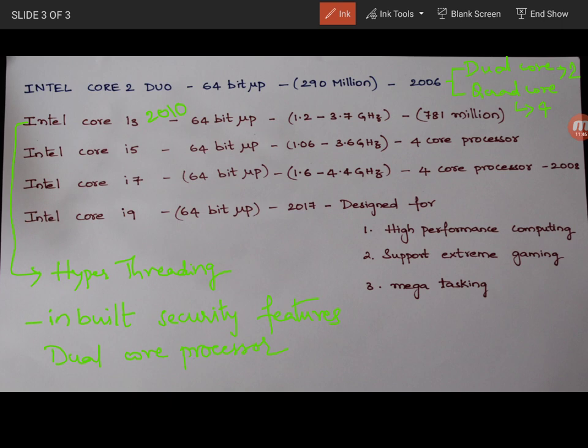So Intel Core i5 processor was having 4 cores. It is a 4 core processor. And it was using the turbo boost facility. The turbo boost facility was first introduced in Intel Core i5. And it operates at 1.06 to 3.6 GHz. And it was released in the year 2009.